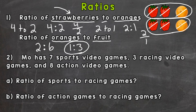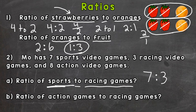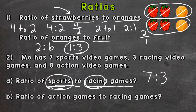Now let's look at number two. Mo has seven sports video games, three racing video games, and eight action video games. We need the ratio of sports to racing games. Sports come first: seven. Racing comes second: three. So there are seven sports games to every three racing games. That one is already in simplest form.